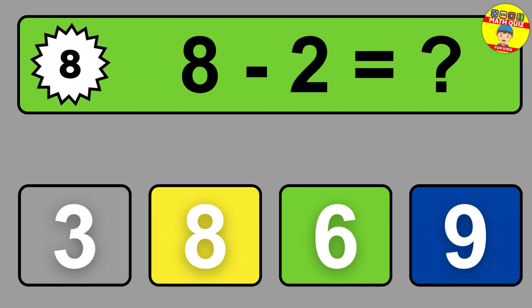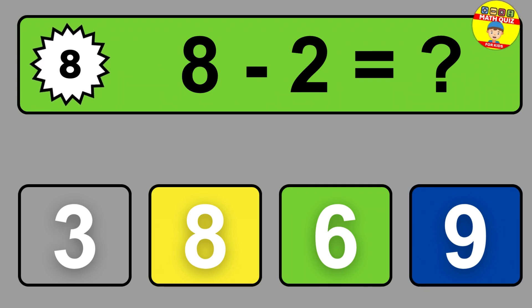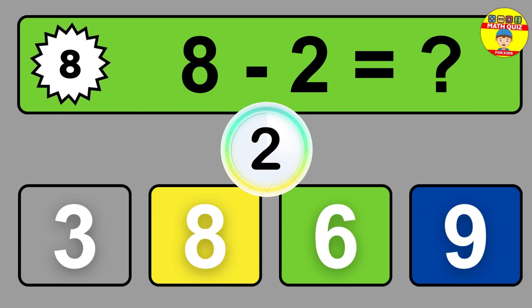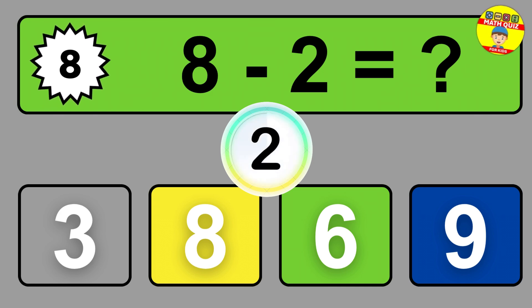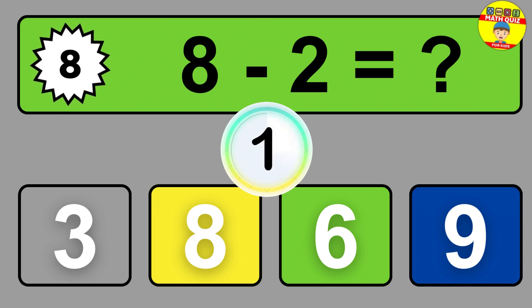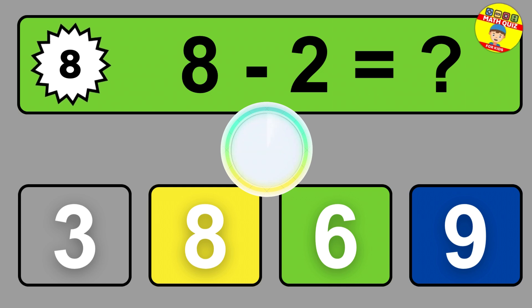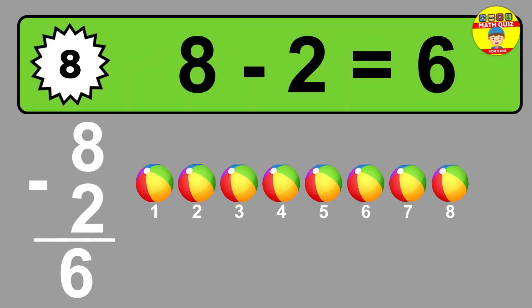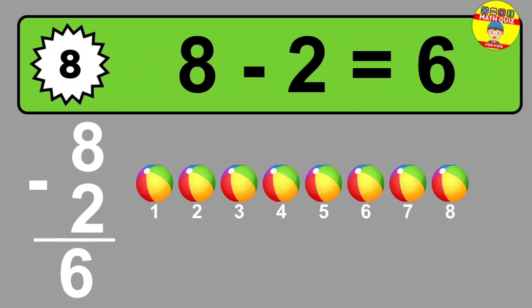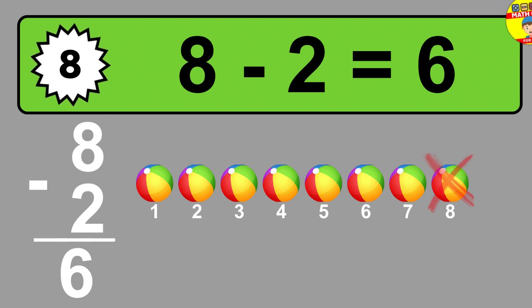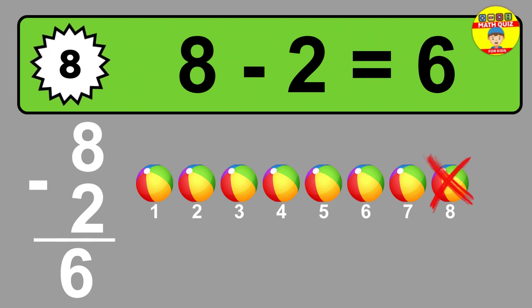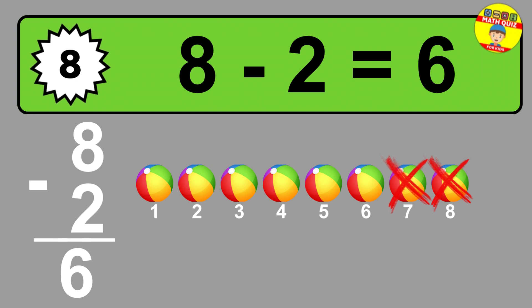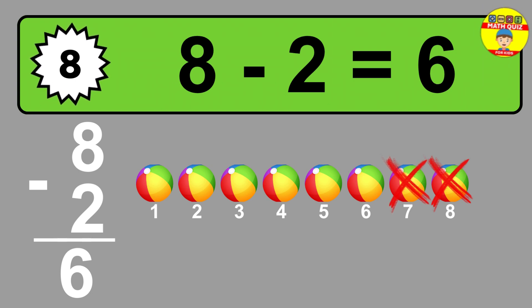Question 8. 8 minus 2 equals what? So the answer is 8 minus 2 is 6. Let's count it: 1, 2, 3, 4, 5, 6.